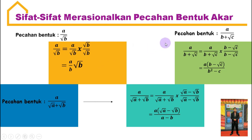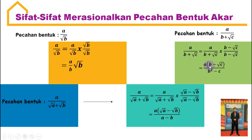Selanjutnya, ada bentuk pecahan A per B plus akar C. Cara merasionalkan: A per B plus akar C dikali sekawan dari penyebut ini. Sekawan dari B plus akar C — jika di sini positif atau plus, maka sekawannya negatif. Jadi A per B plus akar C dikali B minus akar C per B minus akar C. Kalau di sini plus, maka di sini minus; kalau di sini minus, maka di sini plus. Maka hasilnya sama dengan A dikali dalam kurung B minus akar C, per B kuadrat minus C.